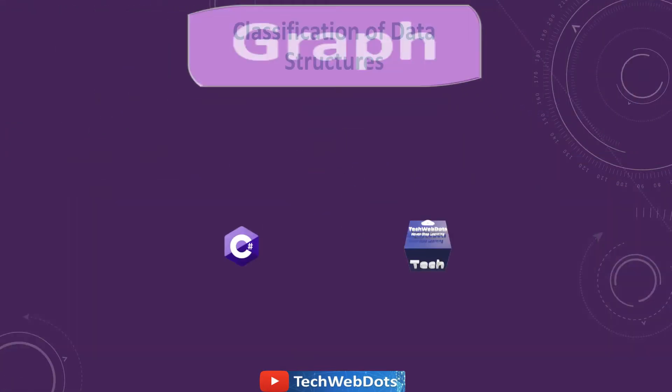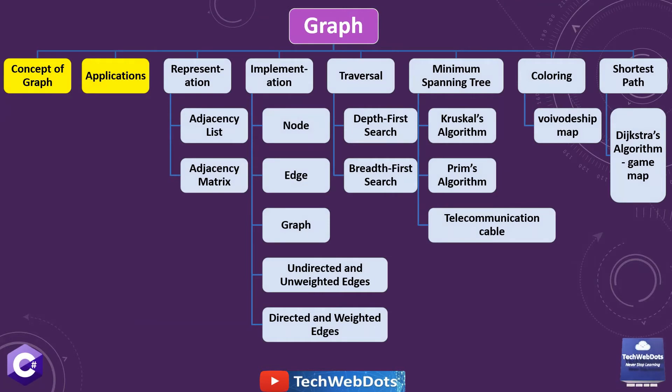If I talk more in terms of graph, this is the hierarchy that contains all the important features of graph. First two points I will definitely cover in this session and in my upcoming session I will cover representation that contains adjacency list and adjacency matrix, similarly its implementation that contains nodes, edge, graph and the complete directed and undirected graph.